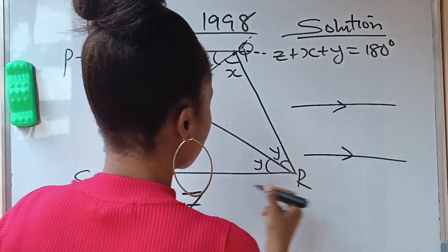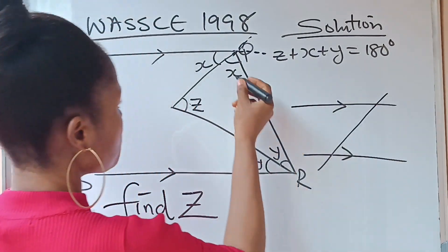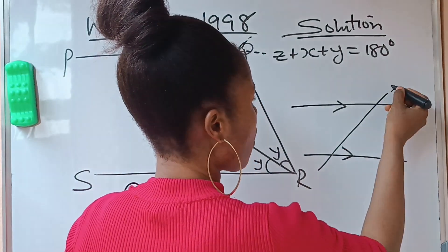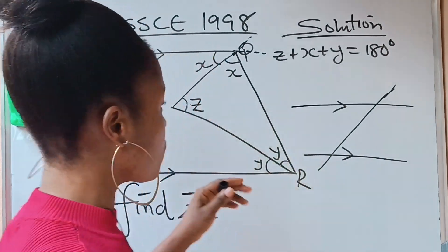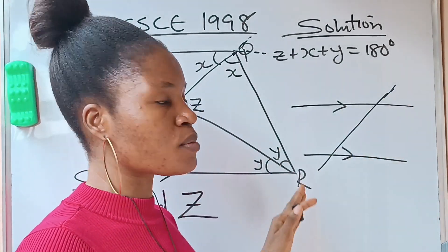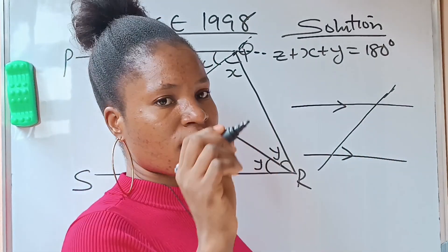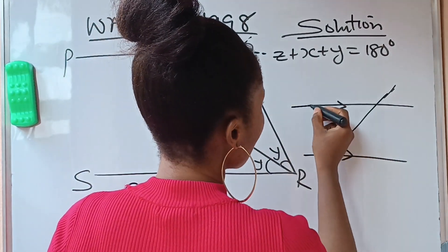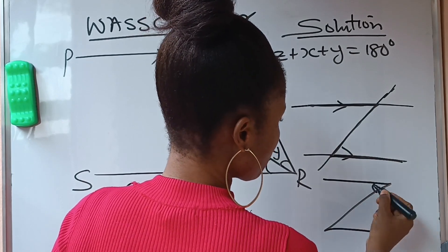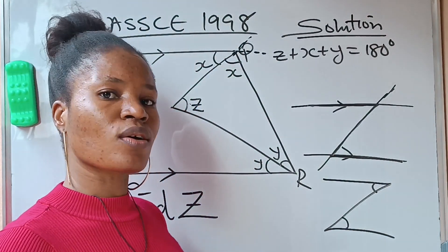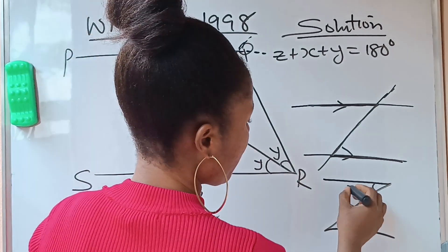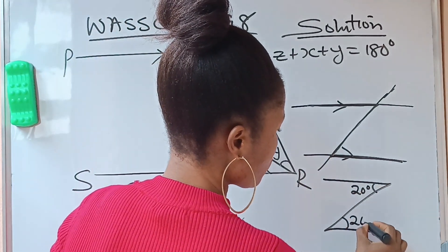When you have two parallel lines crossed by a transversal, one important angle relationship is the alternate angle. To identify alternate angles, form a Z-shape in your mind. The angles at the tips of the Z are alternate angles, and they are equal. So if one tip is 20 degrees, the other is also 20 degrees.